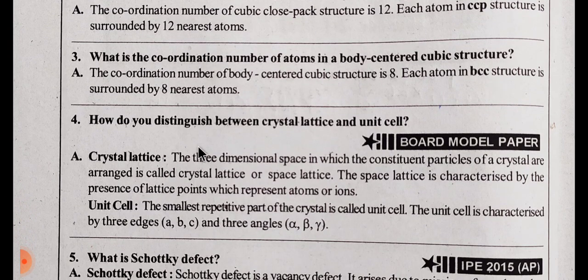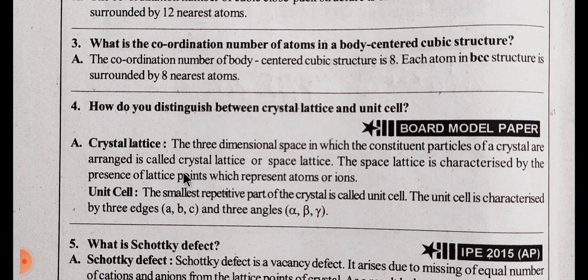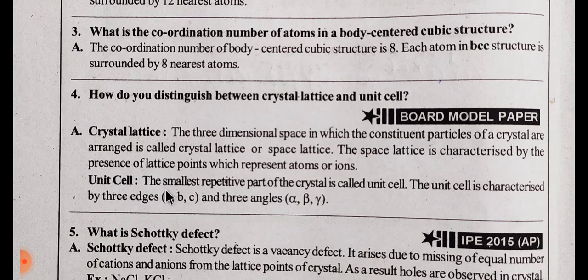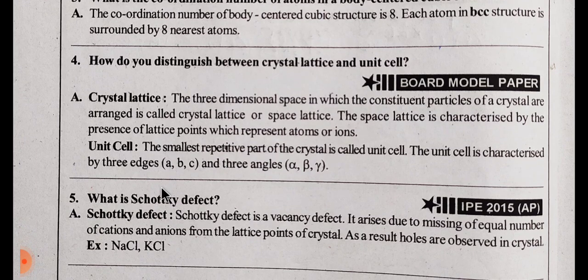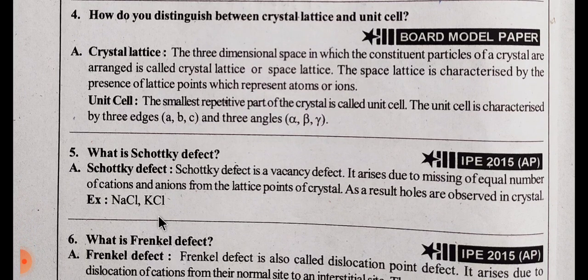Next, how do you distinguish between crystal lattice and unit cell? The crystal lattice is the total crystal. The lattice points are made up in a 3-dimensional direction. For example, in NaCl crystal, Na+ and Cl- ions are made up at the lattice points. The unit cell is the smallest portion of the crystal lattice. It has three edges and angles of alpha, beta, and gamma.